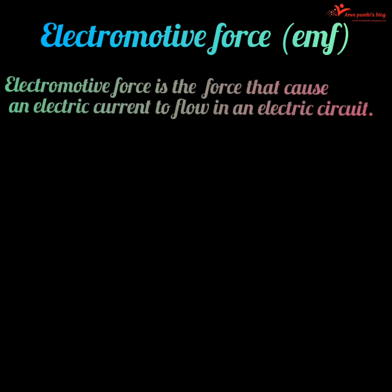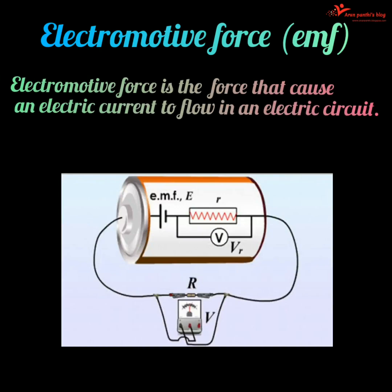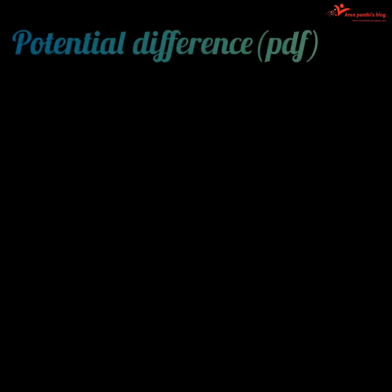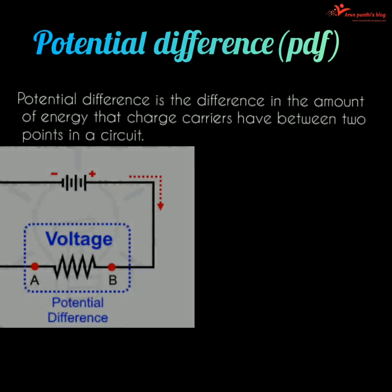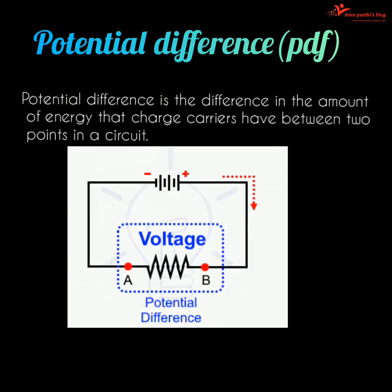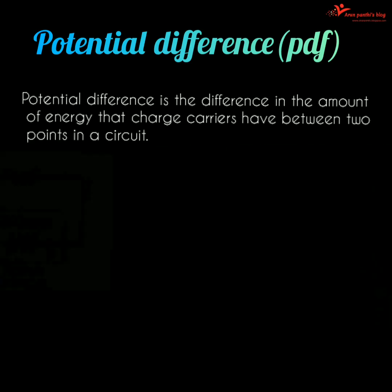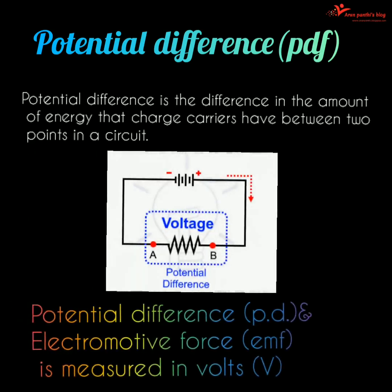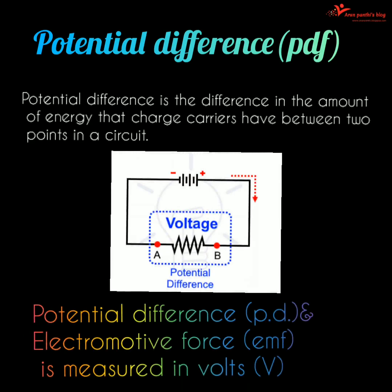Electromotive force is the force that causes an electric current to flow in an electric circuit. The potential difference between two points in an electric circuit is the difference in electrical state which tends to cause the flow of electric current between them. Volt is the unit of both electromotive force and potential difference.